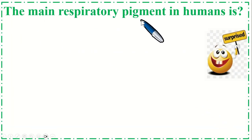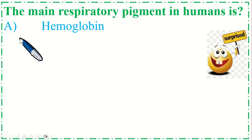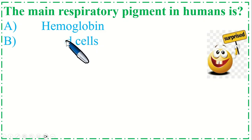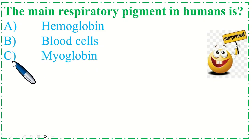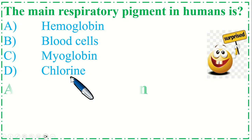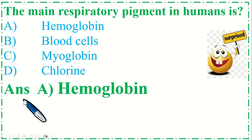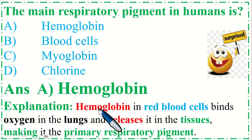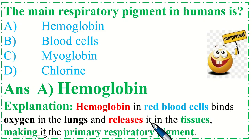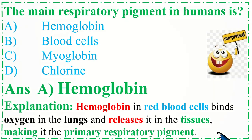The main respiratory pigment in humans is: Option A: Hemoglobin, B: Blood cells, C: Myoglobin, and Option D: Chlorine. The correct option is A, Hemoglobin. Hemoglobin in red blood cells binds oxygen in the lungs and releases it in the tissues, making it the primary respiratory pigment.